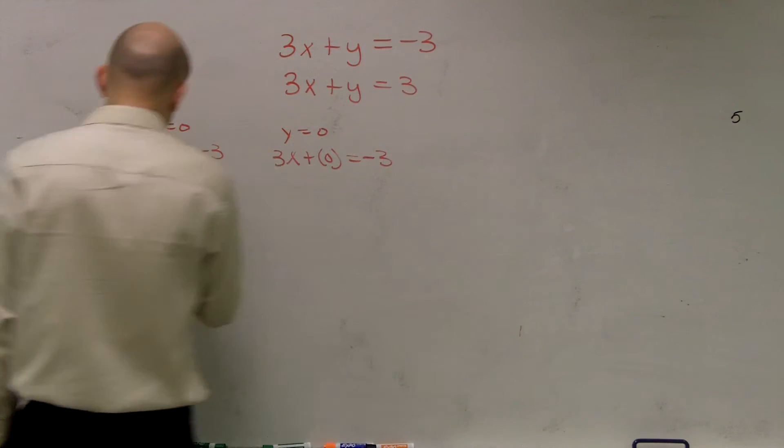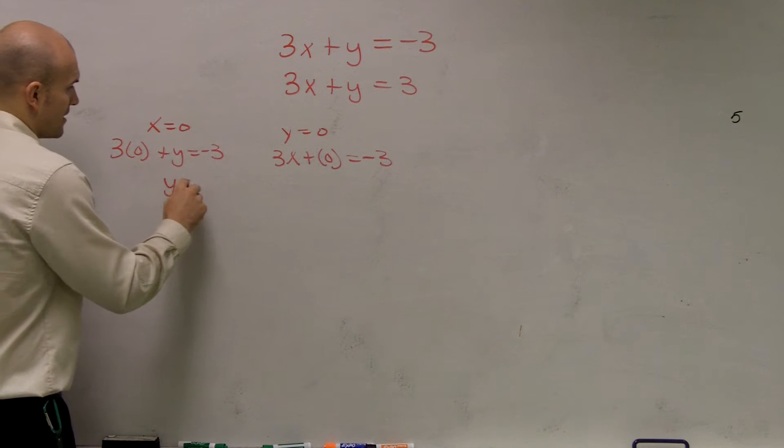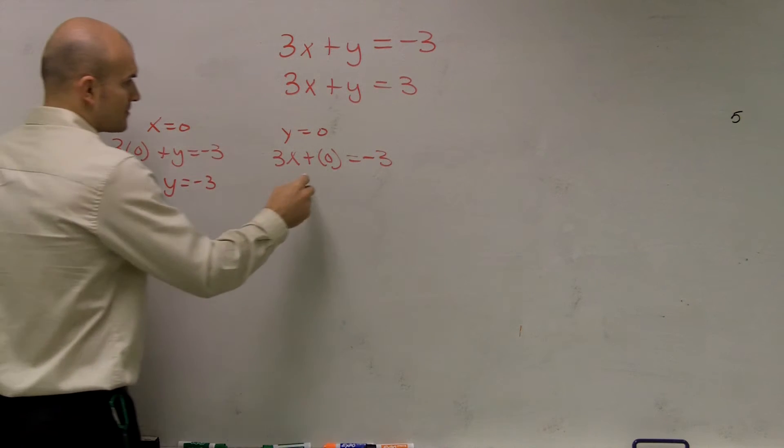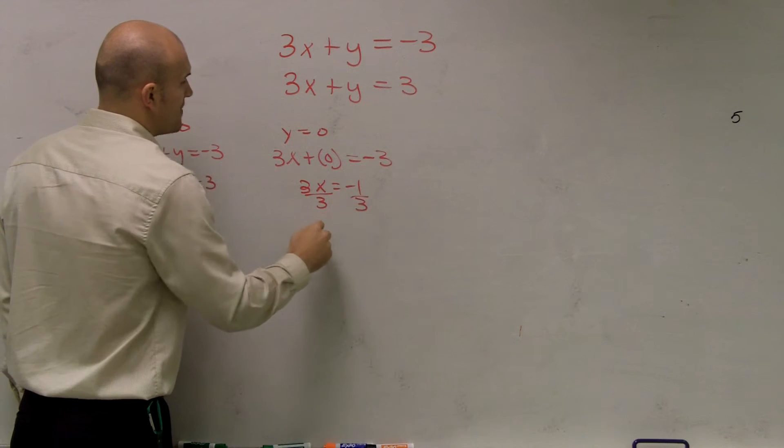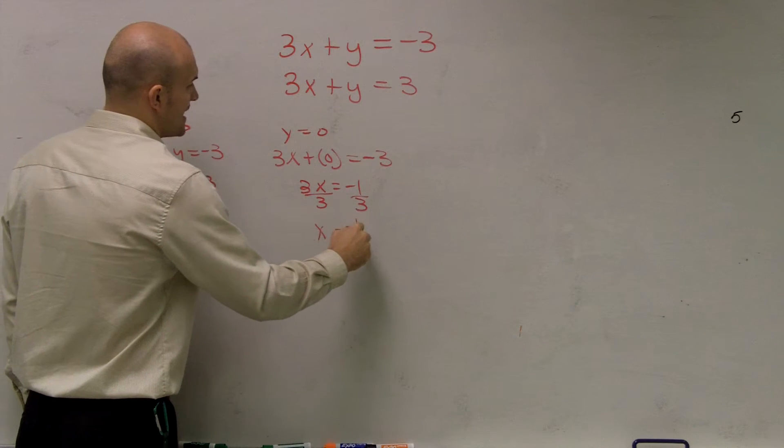So once I do that, it becomes pretty simple because guess what? y equals negative 3. And here I get 3x equals negative 1. Divide by 3. x equals negative 1 third.